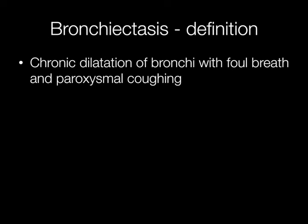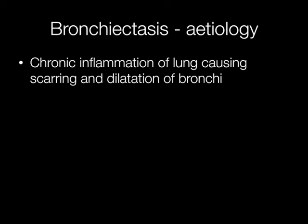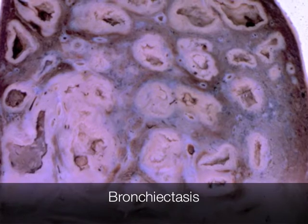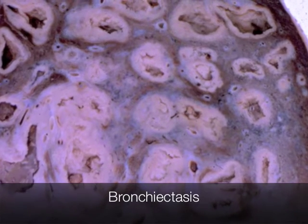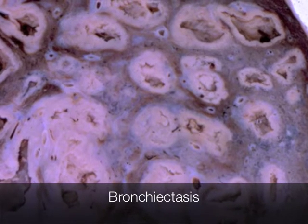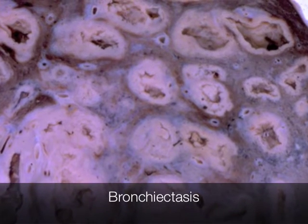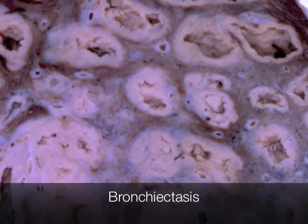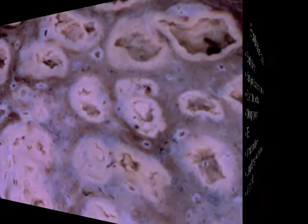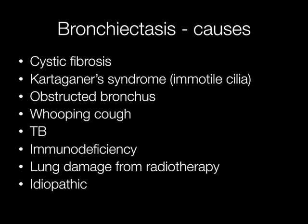Bronchiectasis can be defined as chronic dilatation of bronchi, resulting in foul-smelling breath and paroxysmal coughing. It is caused by chronic inflammation of the lung, resulting in scarring and dilatation of bronchi. This is a slice through the lung of someone who had very severe bronchiectasis — you can see there are multiple dilated bronchi surrounded by scar tissue.